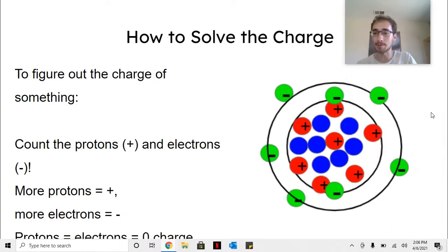Next, remember to figure out the charge of something, you should count the protons and electrons. If there's more protons, it's positive. If there's two more protons, it's plus two. If there's one more proton, it's plus one. If there's more electrons, it's negative. If there's two more electrons, it's minus two. If there's only one more electron, it's minus one. But if they're equal, like this nitrogen, then it's zero, neutral, no charge.